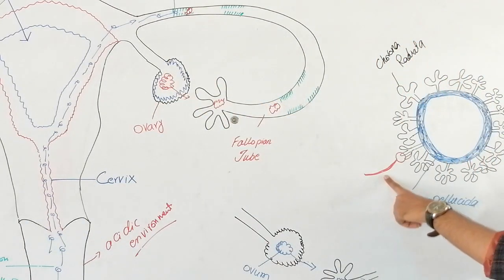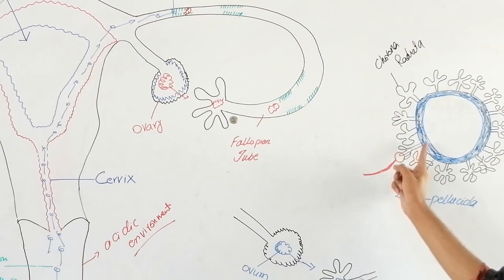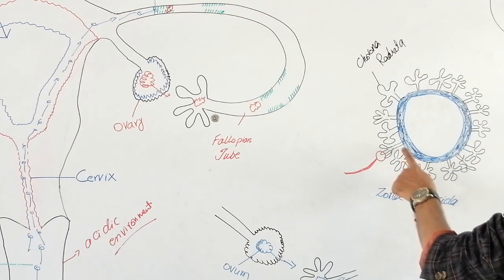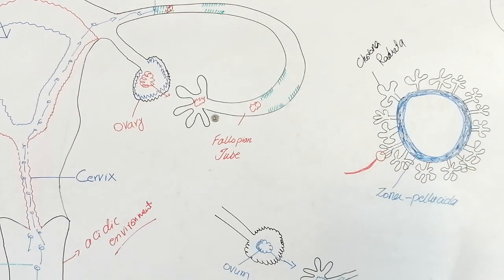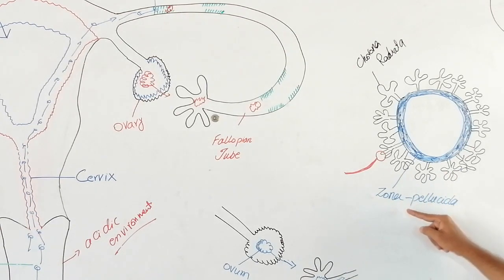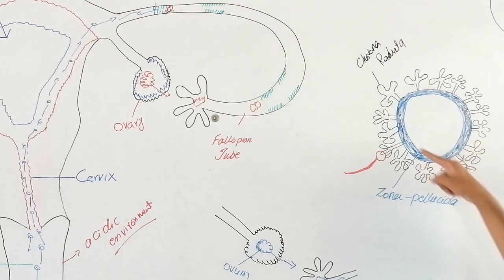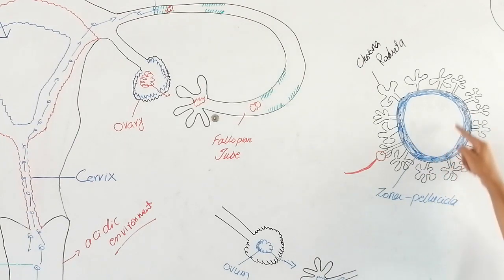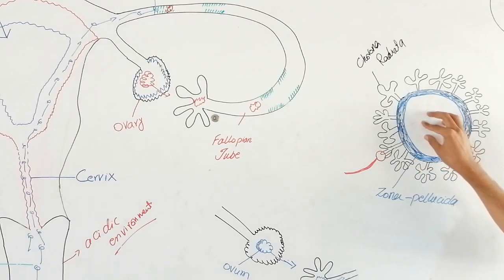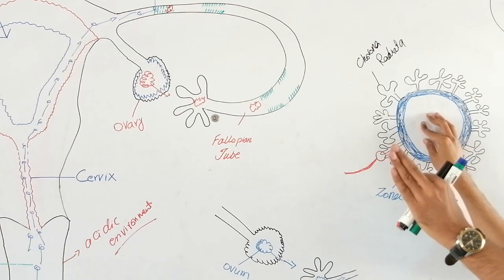When this fittest sperm reaches here, it will penetrate the corona radiata and then hit the wall of the zona pellucida. There are three major functions of the zona pellucida. The first, which I have discussed, is that the zona pellucida is made up of glycoprotein and this glycoprotein will nourish the whole cell. The next function is sperm specification.